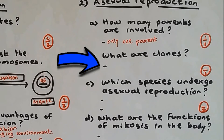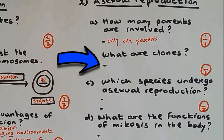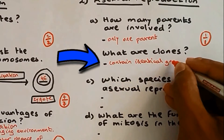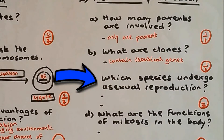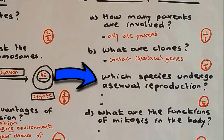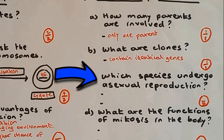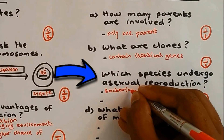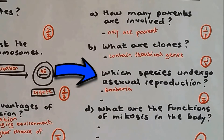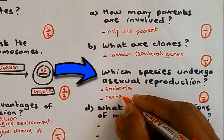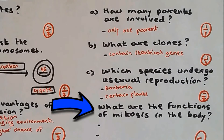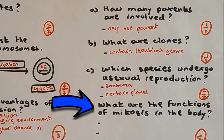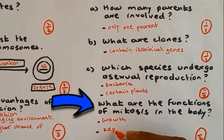What are clones? Clones contain identical genes, so they will look alike. Which species undergo asexual reproduction? Microorganisms undergo asexual reproduction — the best example is bacteria. Certain plants also undergo asexual reproduction. What are the functions of mitosis in the body? Mitosis is needed for growth and repair of damaged tissue.